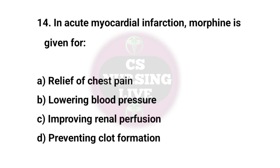Question No. 14. In acute myocardial infarction, morphine is given IV for? Right answer is A. Relief of chest pain.